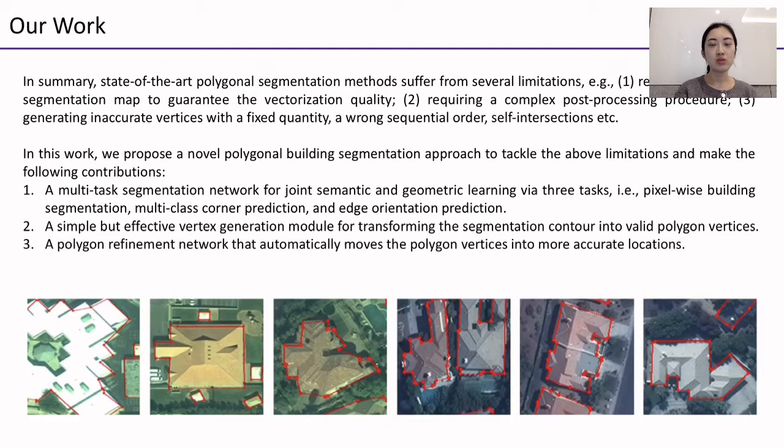In this work, we propose a novel polygonal building segmentation approach to tackle the above limitations and make the following contributions. First, we design a multi-task segmentation network for joint semantic and geometric learning via three different tasks: the pixel-wise building segmentation task, the multi-class corner prediction task, and the edge orientation prediction task.